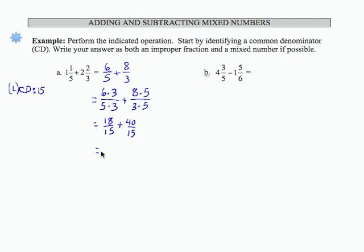Same denominator allows me to combine the numerators. 18 plus 40 gives me 58 over 15.